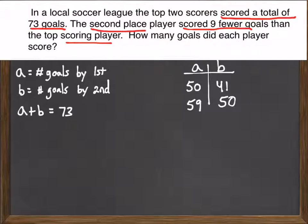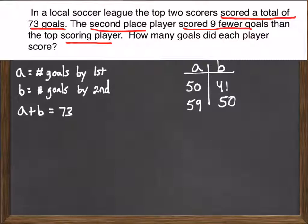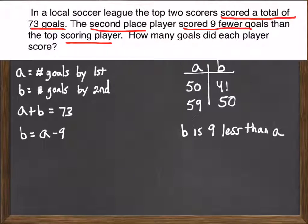When you see the word 'fewer,' most people think subtract. Many people incorrectly think they're going to subtract from B, but the reality is we're actually subtracting nine from A. So we get B equals A minus nine. Another way to rephrase it: if second place scored nine fewer, his goals were nine less than the first player's — B is nine less than A. B equals A minus nine. Writing A equals B plus nine would also be correct.